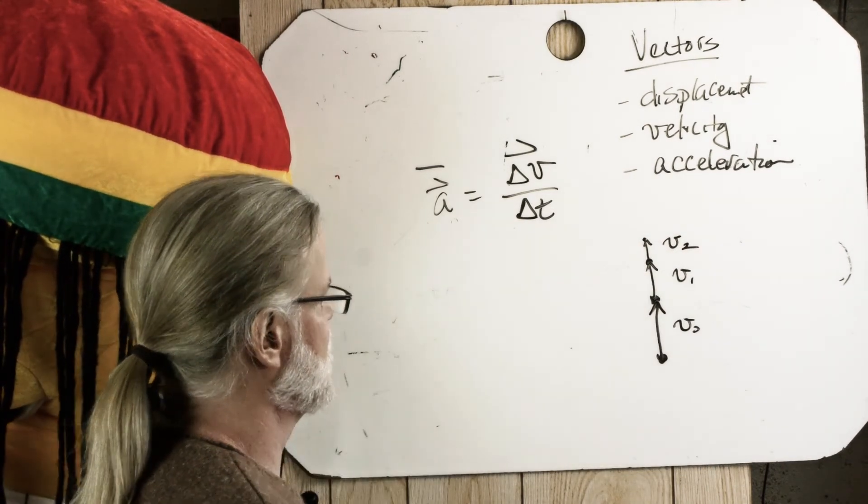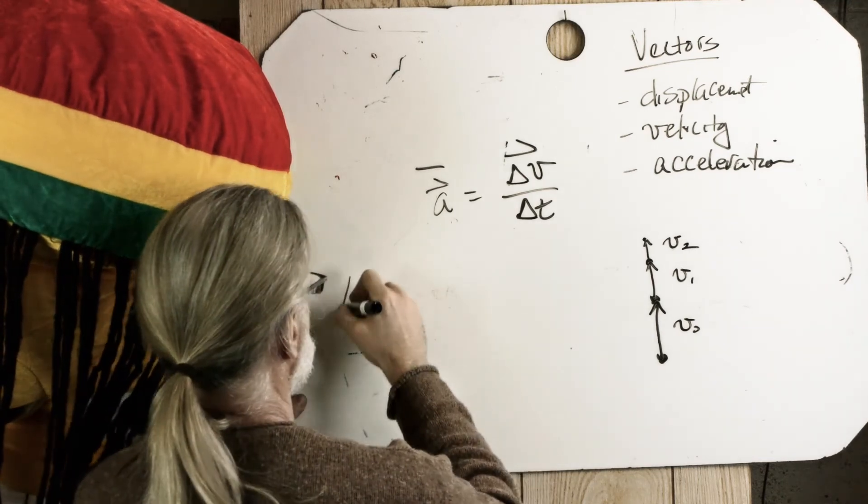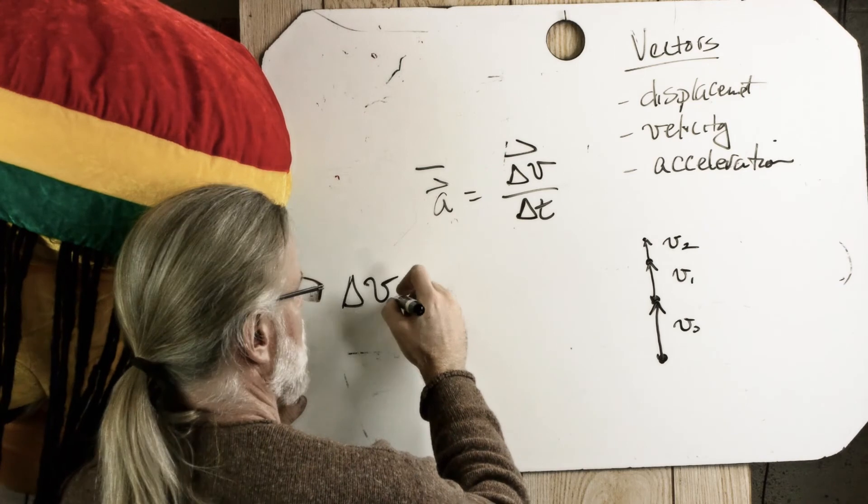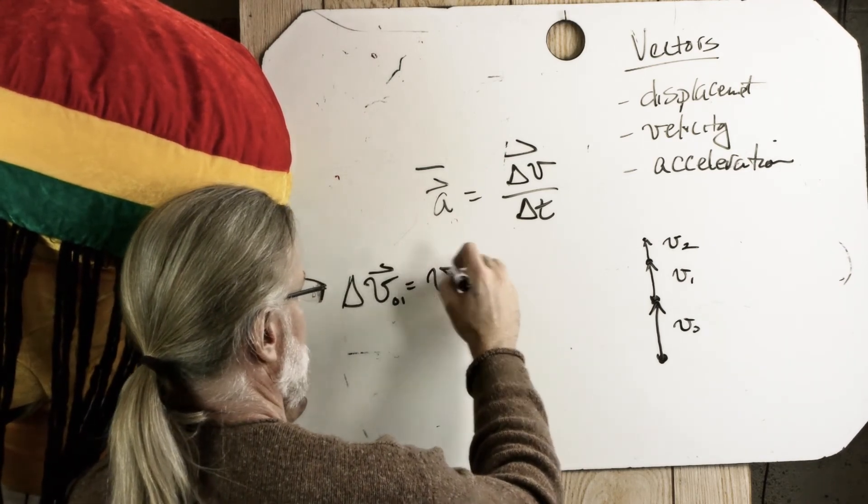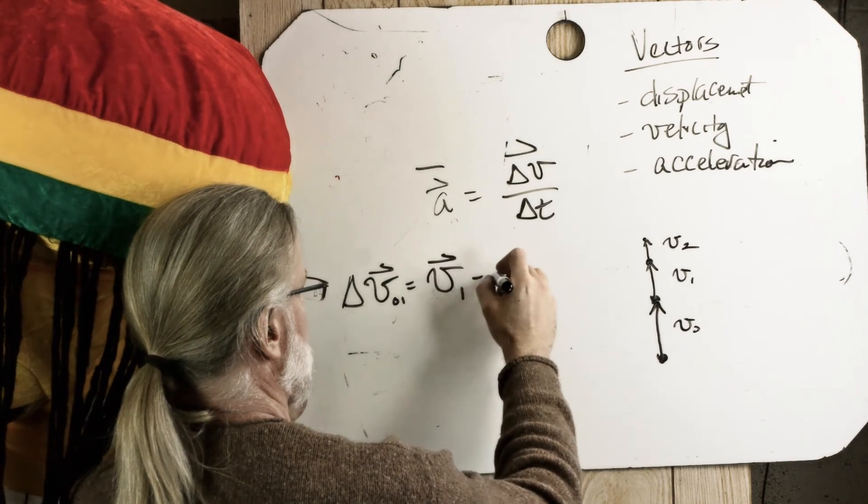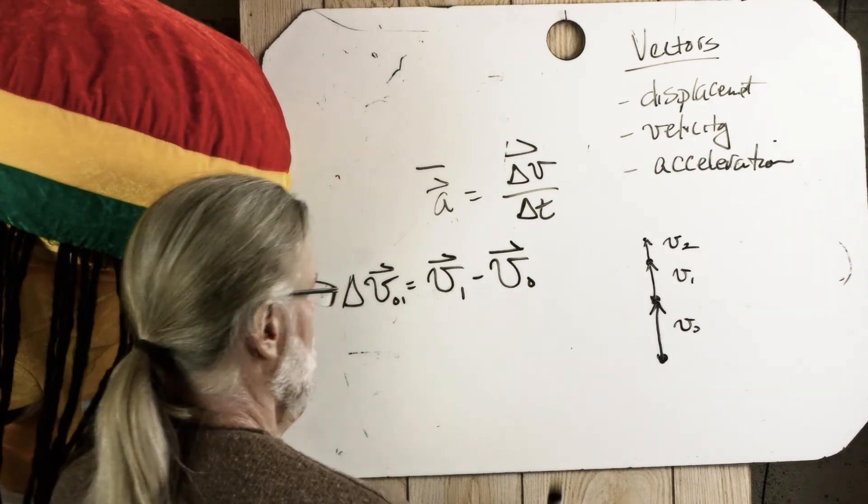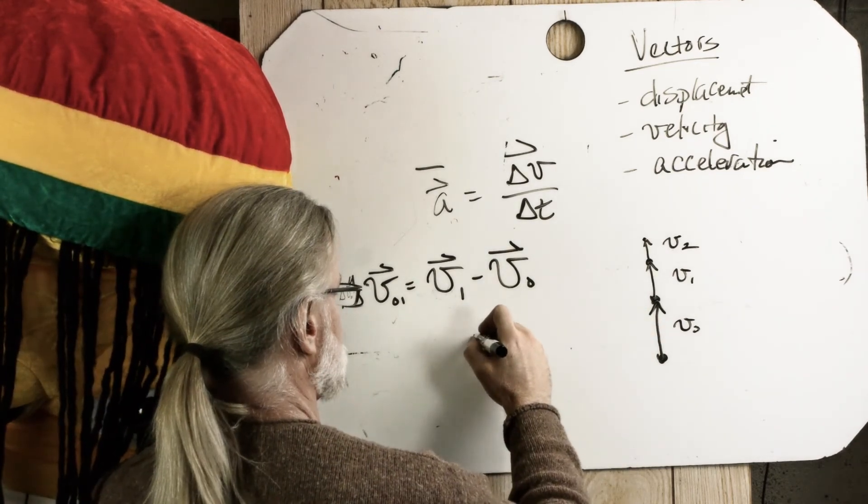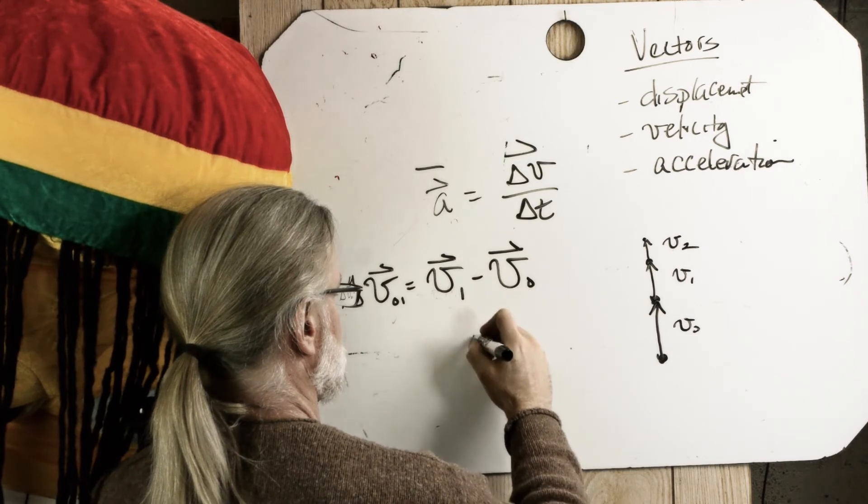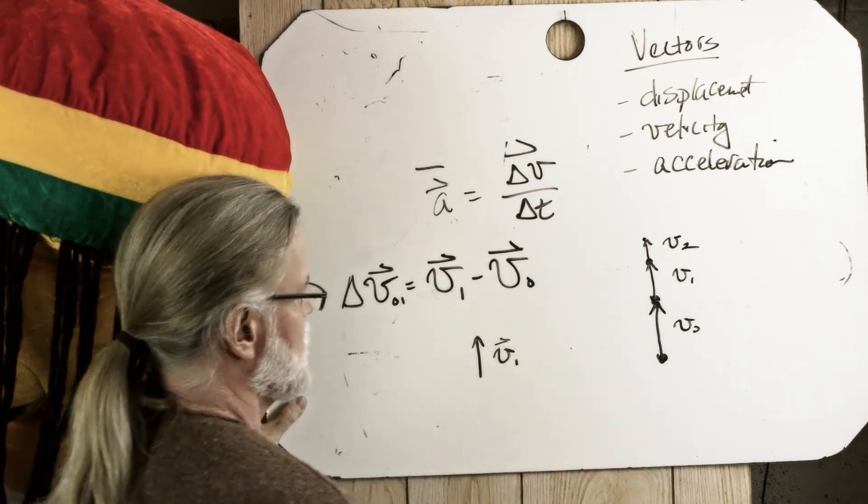Well, let's find the acceleration between V0 and V1. So delta V from 0 to 1 is defined as V1 minus V0. So V1 is right there so it kind of looks like this. There's my V1. It's about that big.